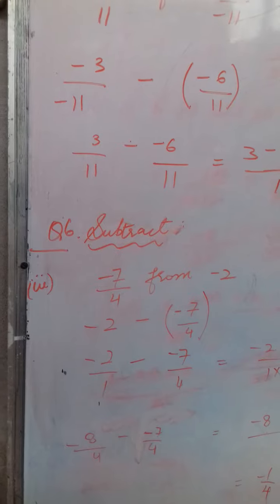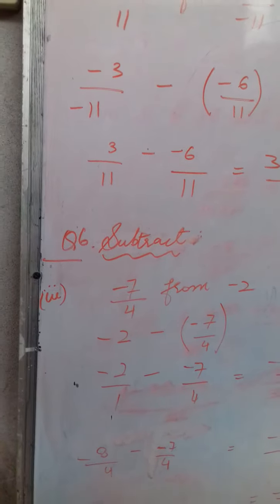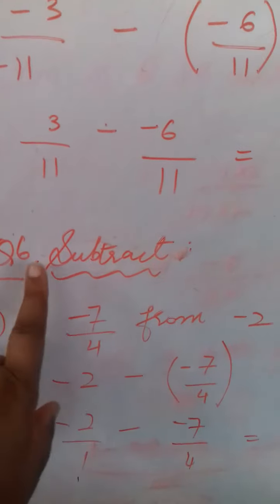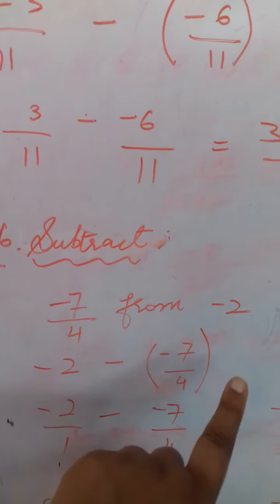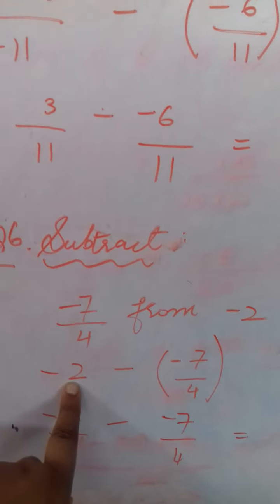Now, question number 6. I am doing the third part. Subtract minus 7 upon 4 from minus 2. So, minus 2 will come first.